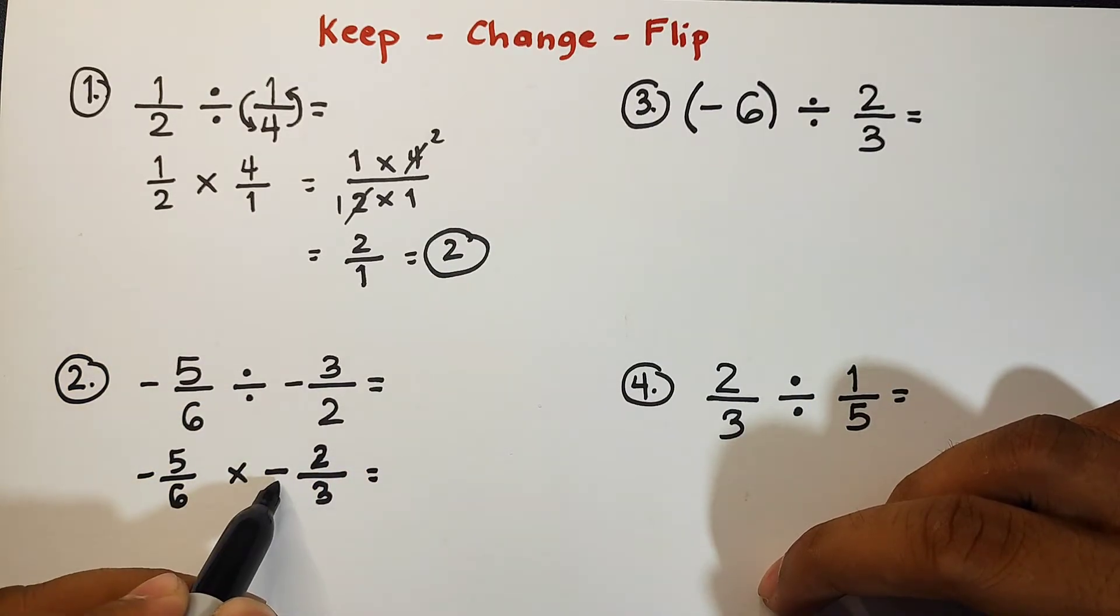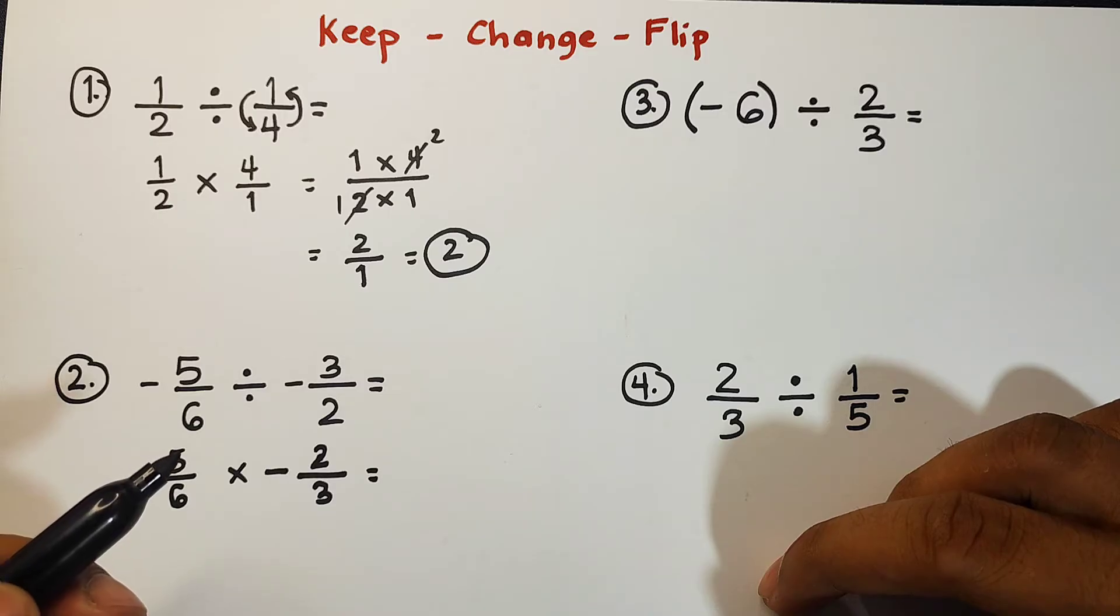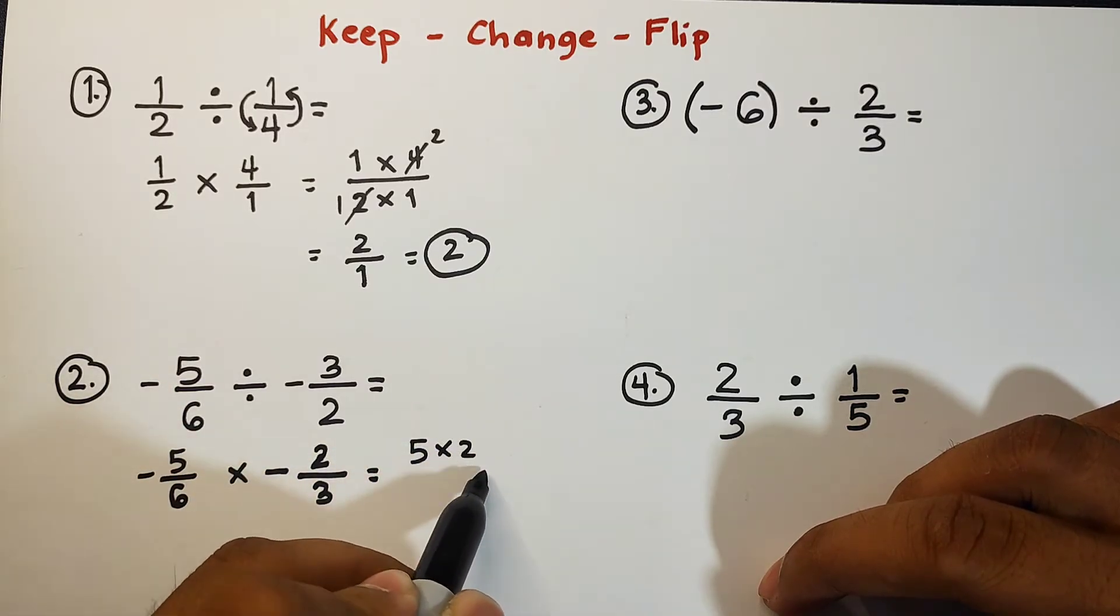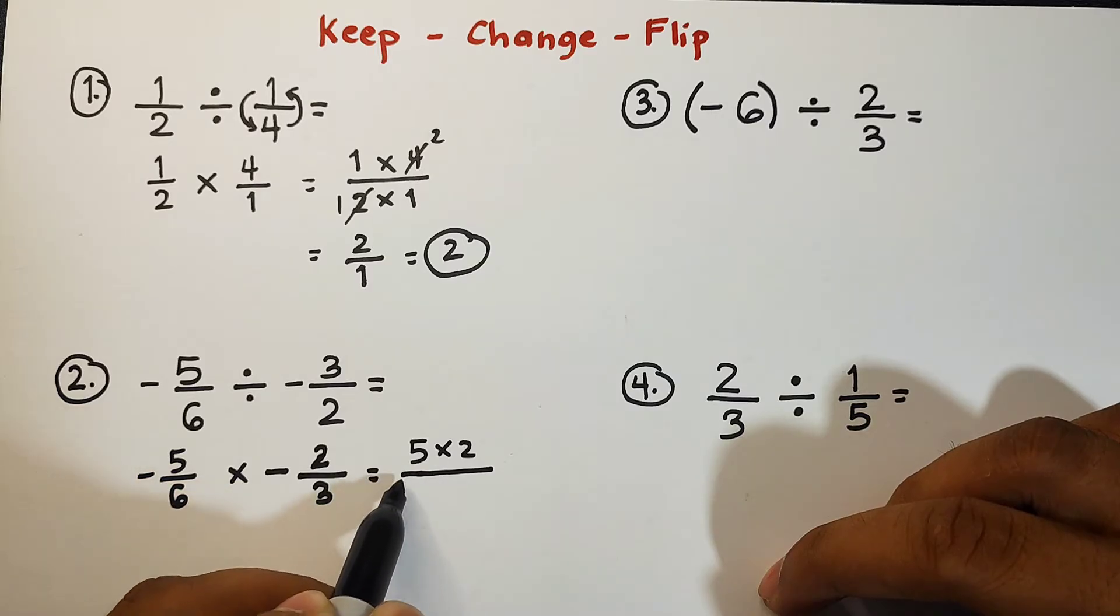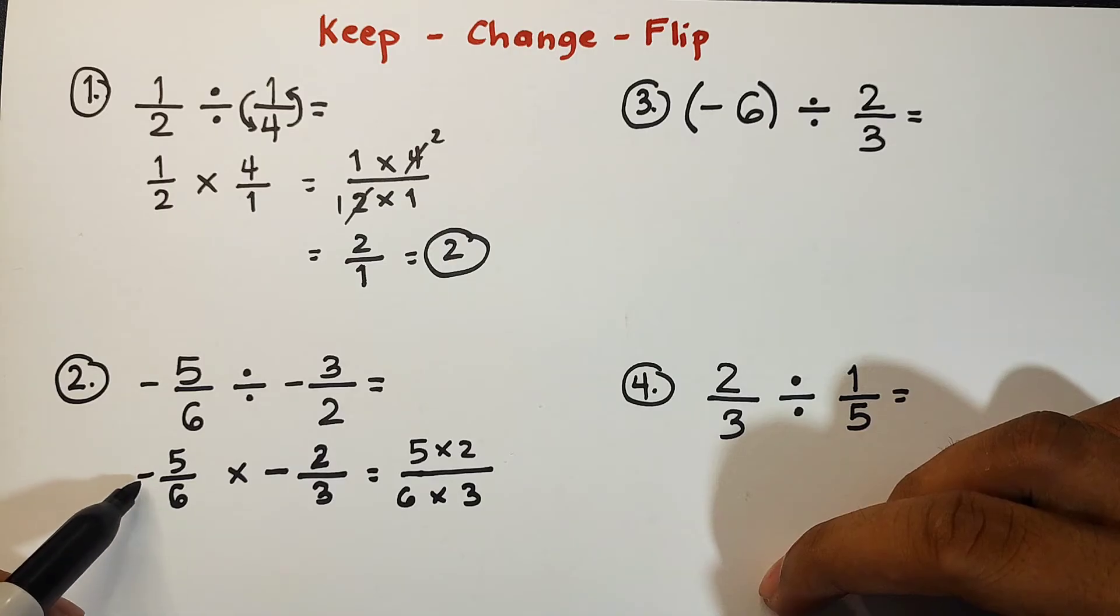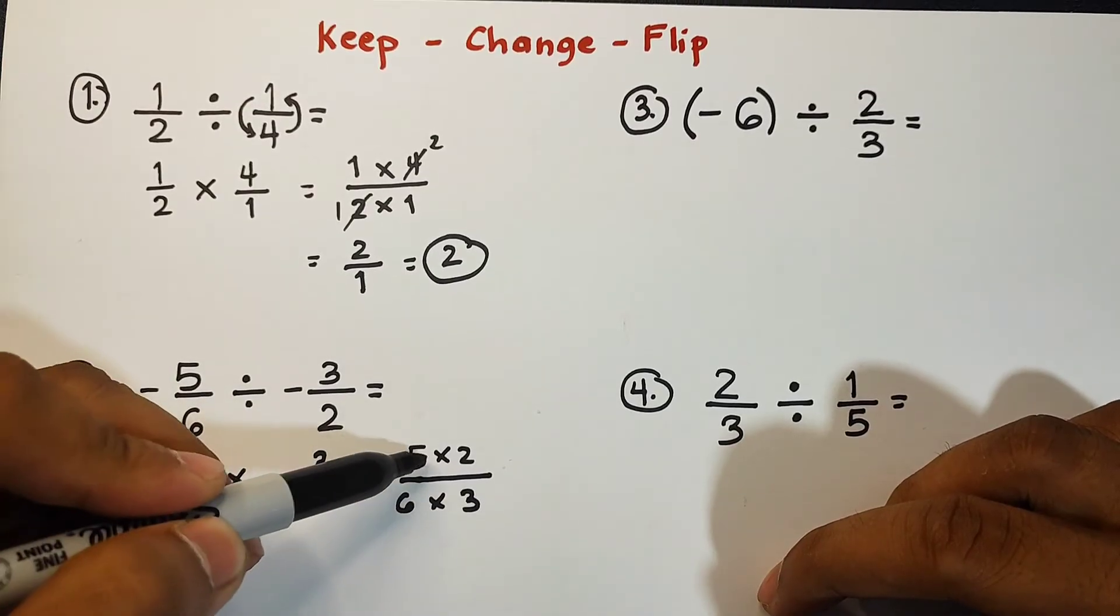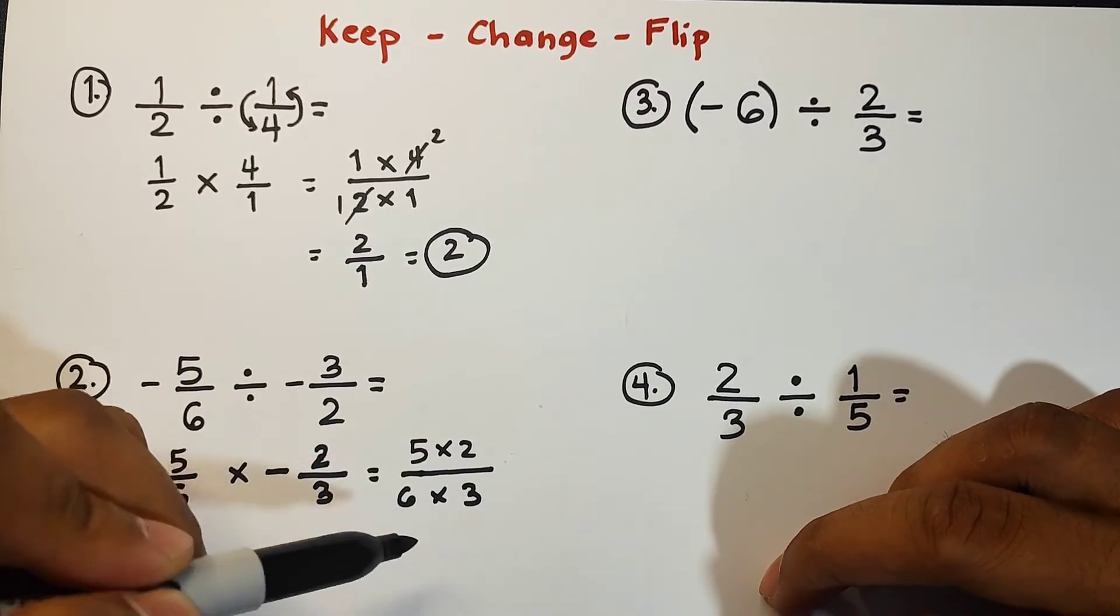Here, negative times negative is positive. Okay? So what we have is five times two over six times three. So again, the very reason why the negative signs disappeared, because negative times negative is positive. Here, we have five times two over six times three.